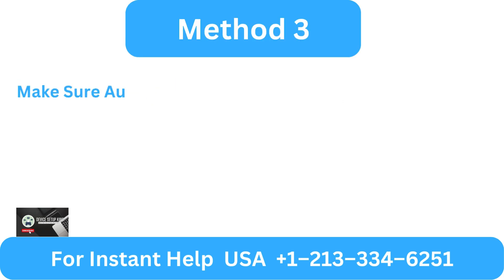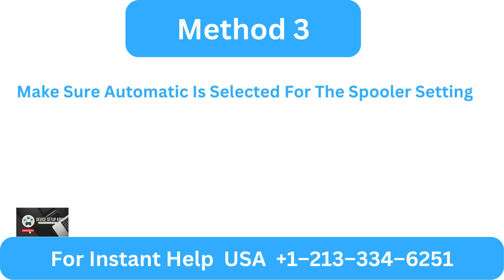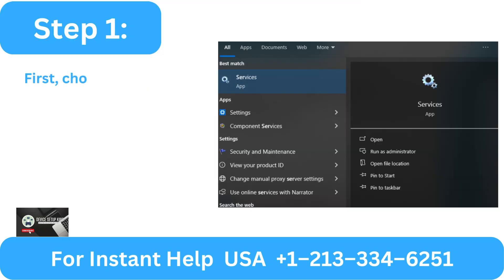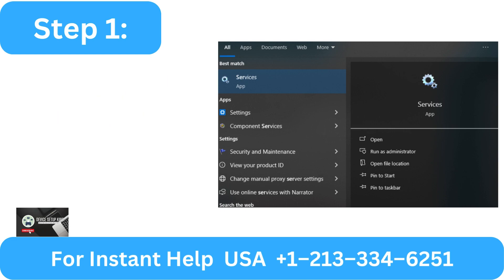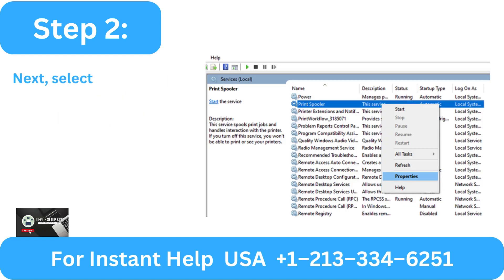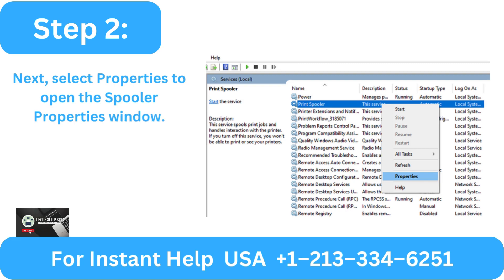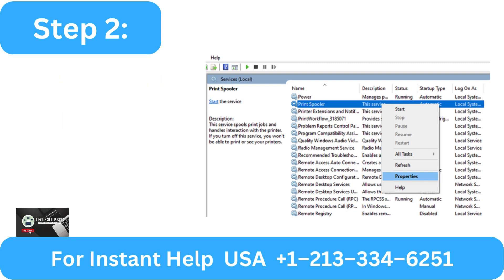Method 3: Make sure automatic is selected for the spooler setting. Step 1: Choose the print spooler with a right click in the services box. Step 2: Select properties to open the spooler properties window.